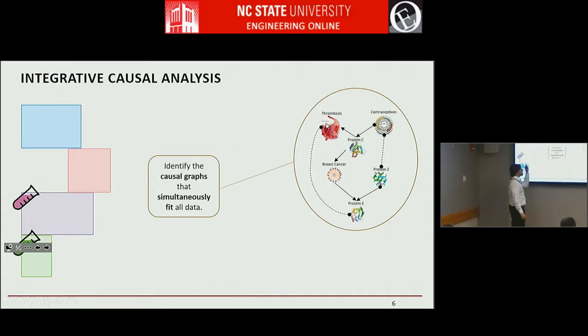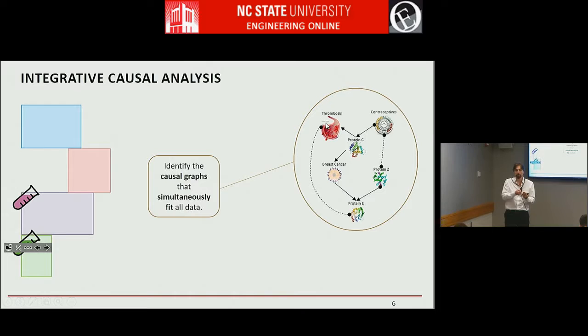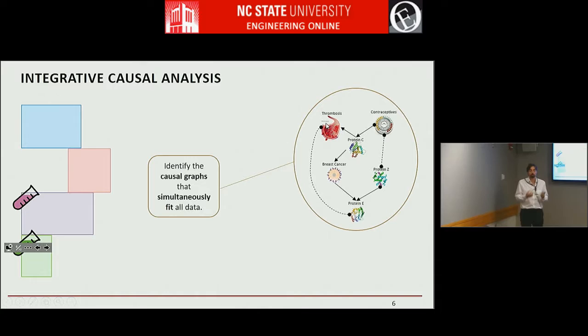The idea is that we try to identify the causal graphs that simultaneously fit all the data. When you have one data set, the problem of causal discovery is to figure out what is causing what — what is the data generating mechanism? This is extremely important. If you want to design a drug, you want to intervene on the things that cause the disease. If you apply this in business, you want to have a promotion or intervene on the things that affect the behavior of your clients.